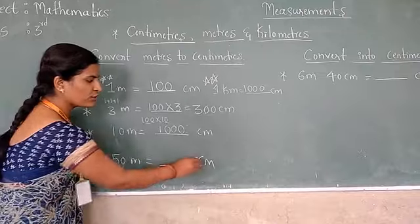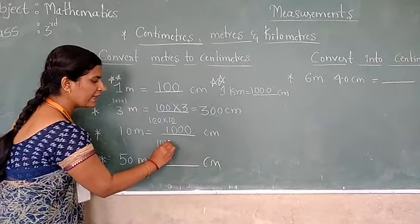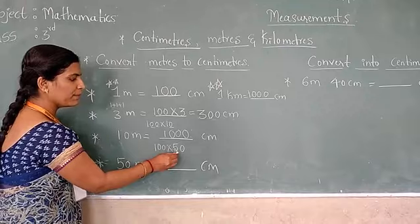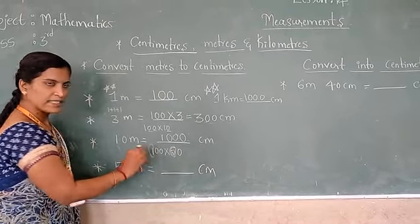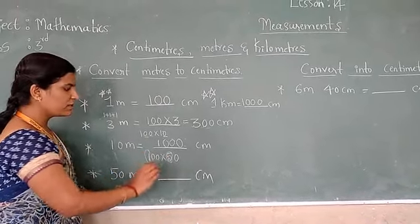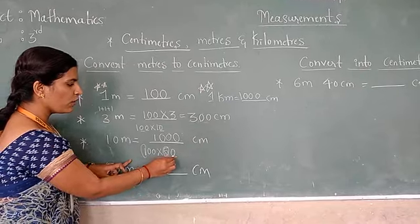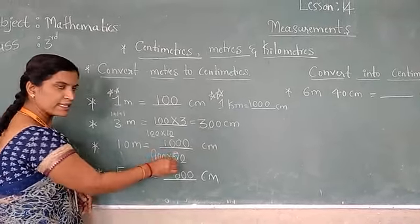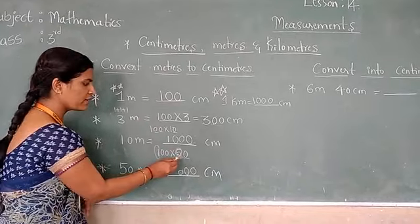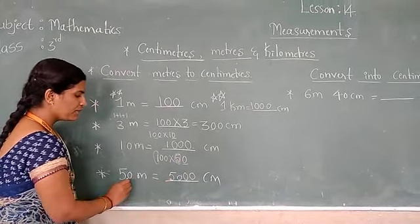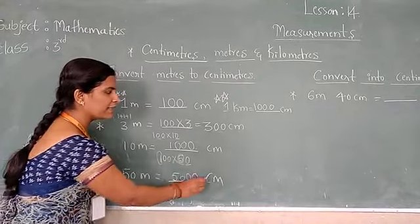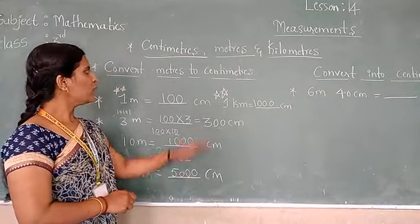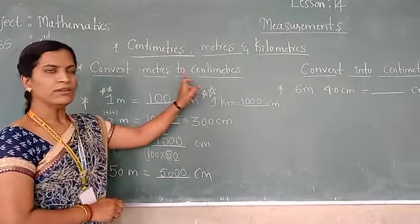50 meters equals how many centimeters? 100 multiplied by 50. Count the number of zeros: one, two, three. Three zeros. Next, the non-zero numbers: five times five. That is, 50 meters is nothing but 5000 centimeters. This is about conversion of meters to centimeters.